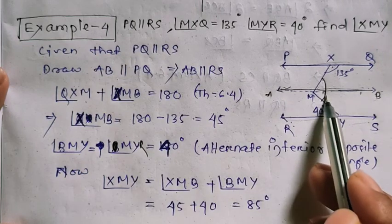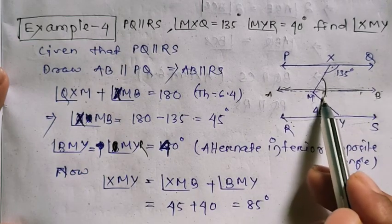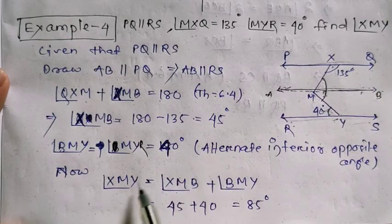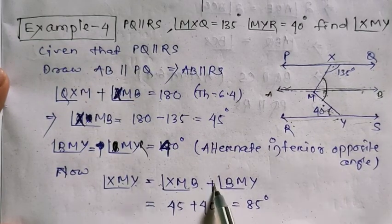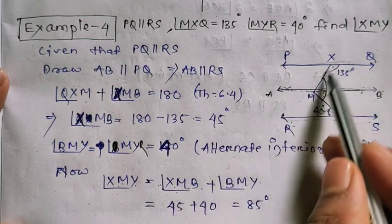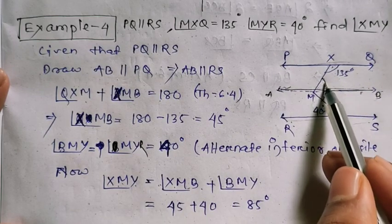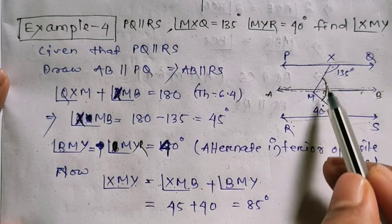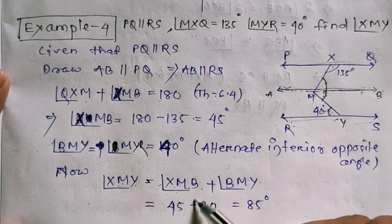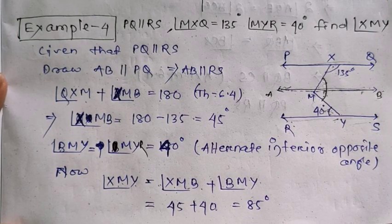So angle XMB equals 45 degrees and angle BMY equals 40 degrees. Therefore, angle XMY equals angle XMB plus angle BMY equals 45 plus 40 equals 85 degrees. This is the solution to Example 4.